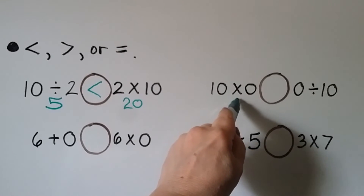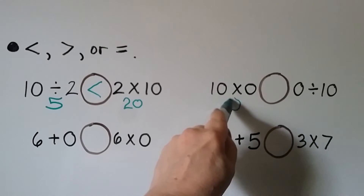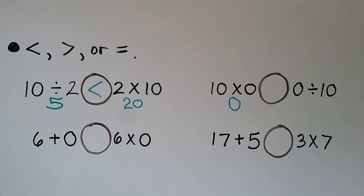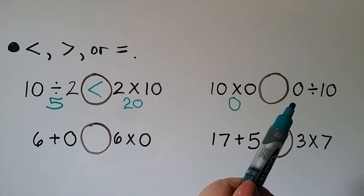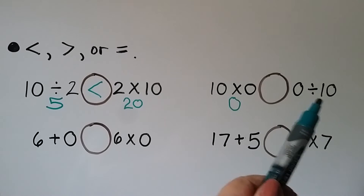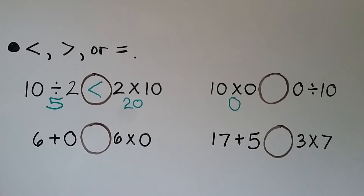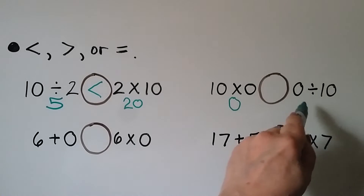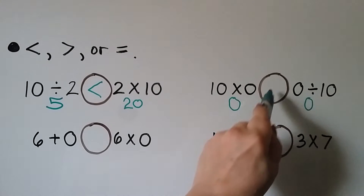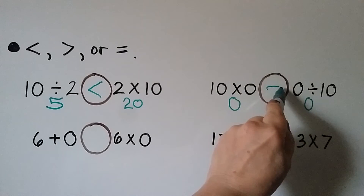Here we have 10 times 0 — that is 0, because 0 times any number is 0, that's the zero property. And 0 divided by 10: if we had 0 cookies and put them into 10 boxes, how many cookies would be in each box? There are no cookies, so it would be 0. So 0 equals 0.